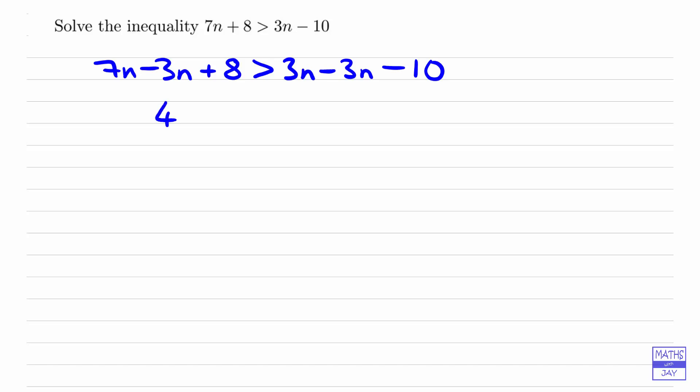So that means we've got 4n plus 8 is greater than negative 10. And then we want the 4n to be on its own, so we want to subtract 8 from both sides. So we've got 4n is greater than negative 10, take away 8. So 4n is greater than negative 18.